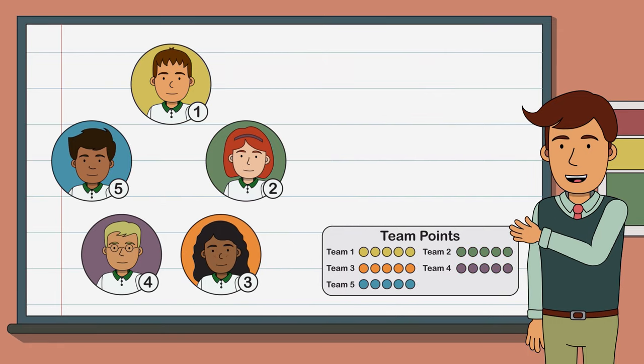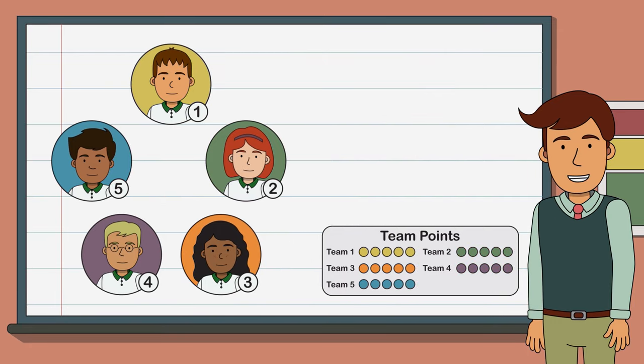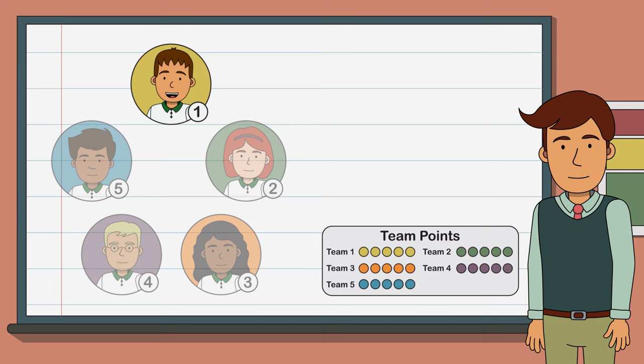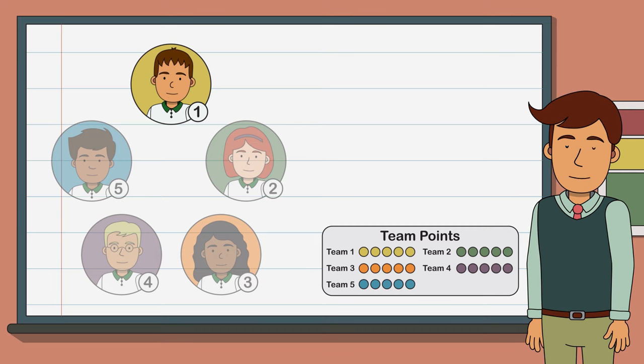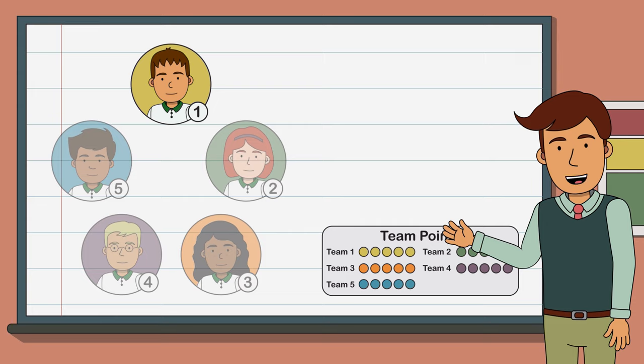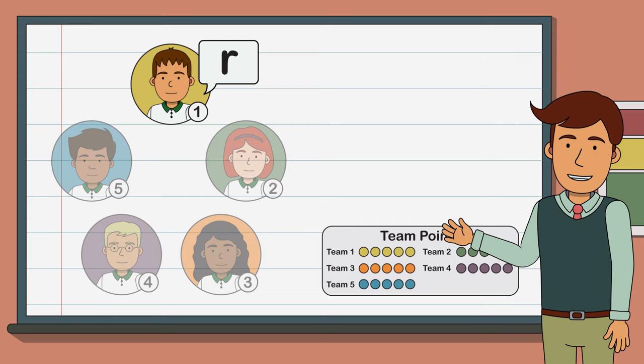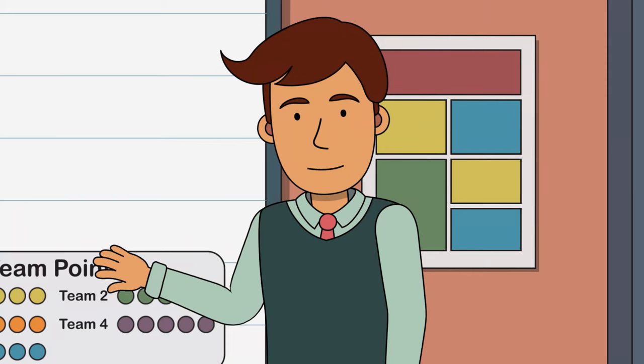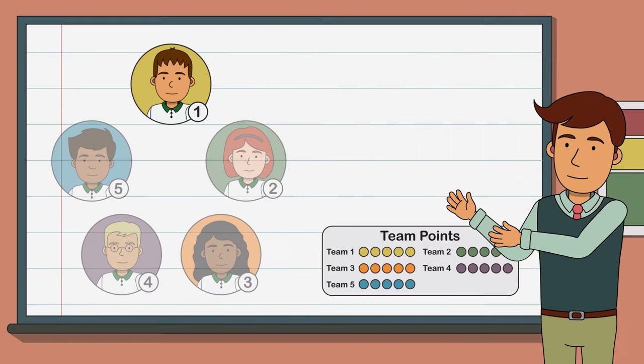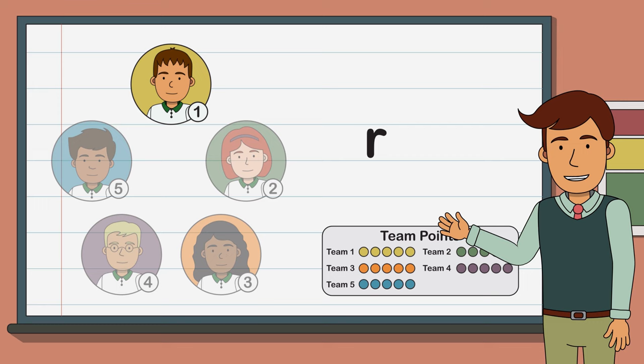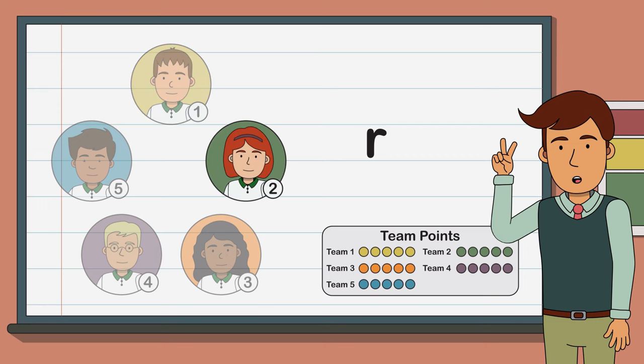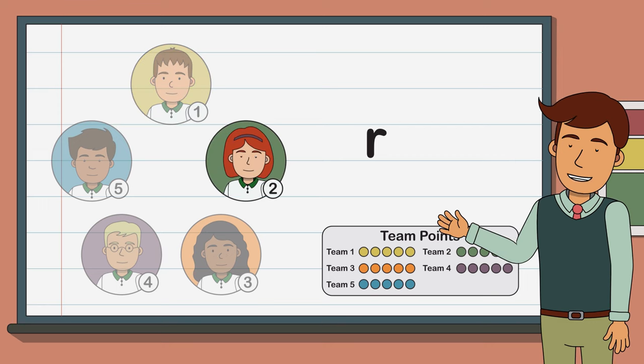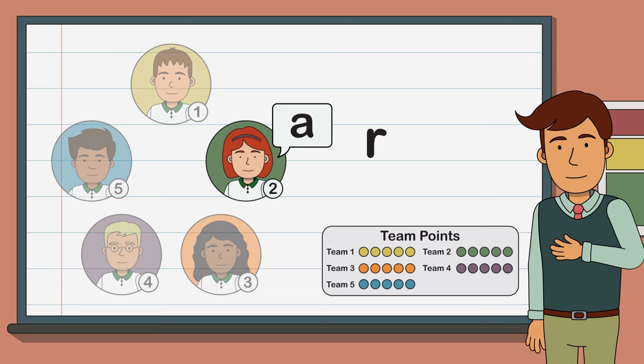The teacher randomly chooses a starting team. In our game, team one is going to start. After a brief whispered discussion with their teammates, the captain of team one announces the letter R. The teacher records the letter for the whole class to see. Play continues to team two, and after a brief discussion, the captain says the letter A. Again, the teacher writes it down.